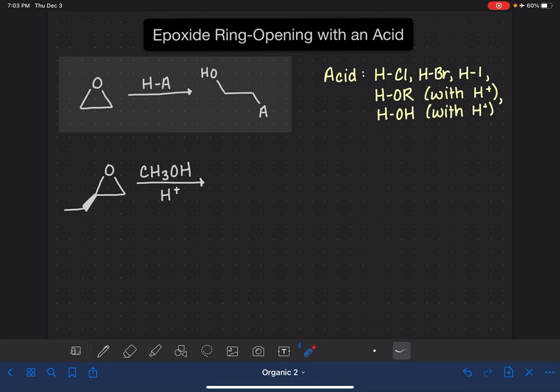In this video, we are going to look at an acid-catalyzed epoxide ring opening reaction. This is an epoxide, and an epoxide is a three-membered cyclic ether.